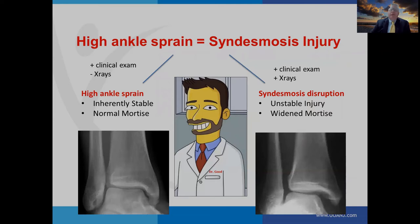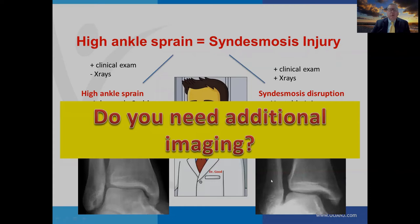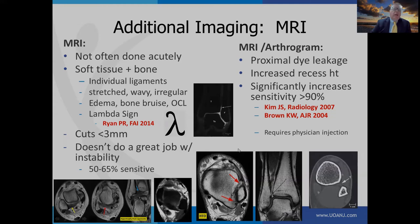Given the choice of a positive clinical exam with normal x-rays versus positive clinical exam with positive x-rays, it's easy to determine the latter needs surgical work. But the doctor needs to decide whether additional imaging is needed. The imaging modality of choice is MRI, often not done acutely, but increasingly used with high-level athletes. MRI is good at imaging soft tissue and bone — you can see individual ligaments appearing stretched, wavy, or irregular, and also see edema and bone bruising.